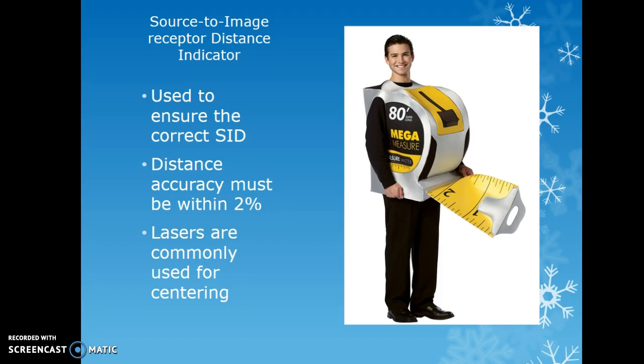The source-to-image receptor distance indicator is essentially the measuring tape, used to ensure the correct SID, which affects technique selection. Distance accuracy must be within 2%, so a broken tape measure cannot be used as a guideline. Lasers are commonly used for centering, along with the collimating light.